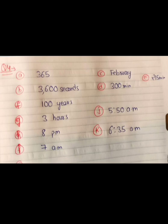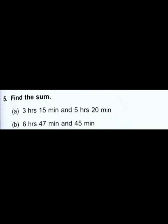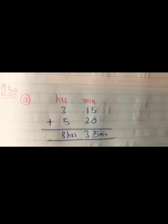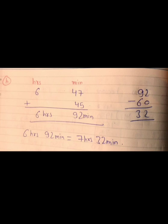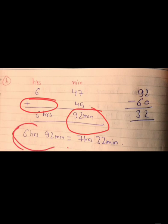Question number 5 — find the sum. Part A: 3 hours 15 minutes plus 5 hours 20 minutes equals 8 hours 35 minutes. Part B: 6 hours 47 minutes plus 45 minutes. Adding gives 6 hours 92 minutes. Since minutes exceed 60, subtract 60 and add 1 hour: the answer is 7 hours 32 minutes.